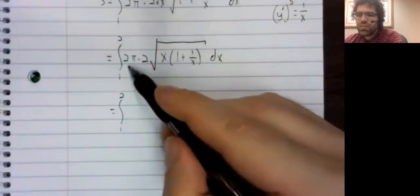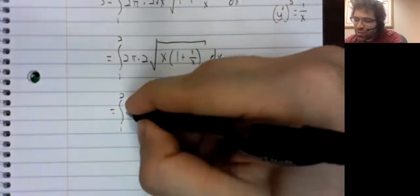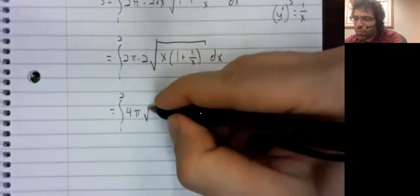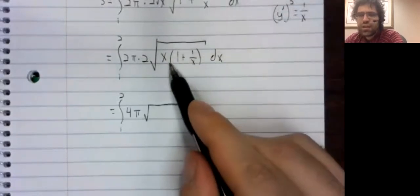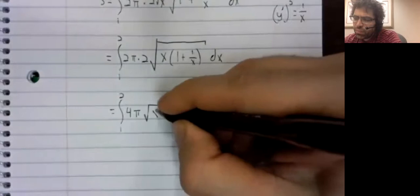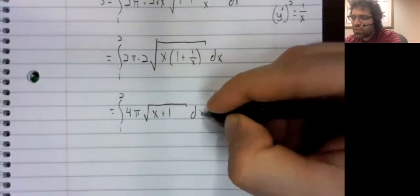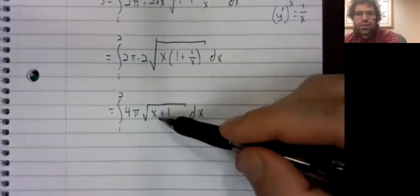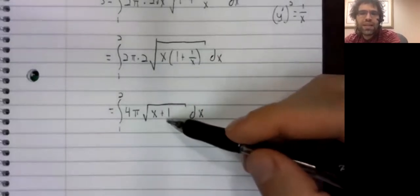We can, let's go ahead and do the obvious. Two times two is four. We can simplify this as x plus one. And now, this happens to be an integral we can take.